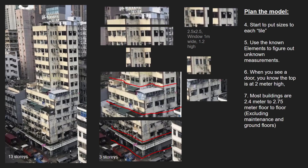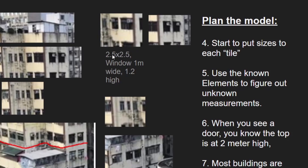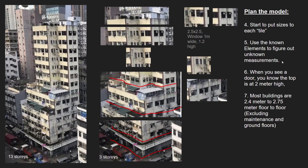I use known elements to give sizes to the unknown. For instance, I know a door is two meters high, and I can use that size to work out the rest of the scene. For instance, I can make an educated guess that a tile is 2.5 meters by 2.5 meters, with the window being one meter wide and 1.2 meters high.